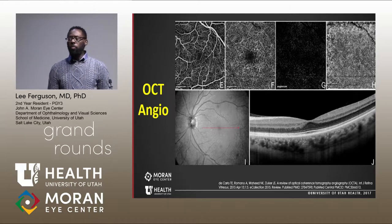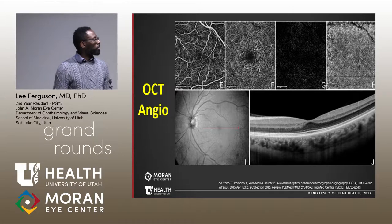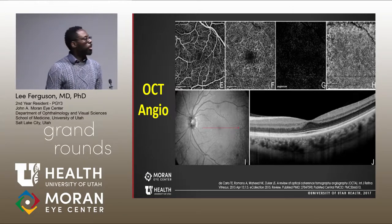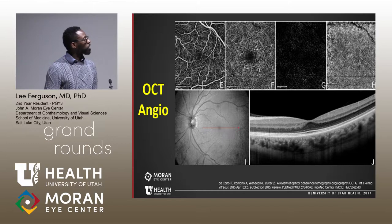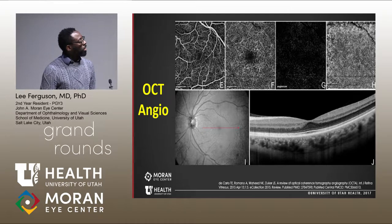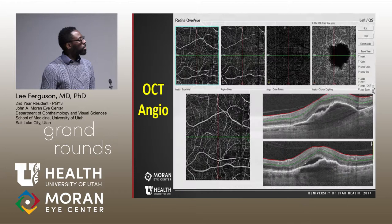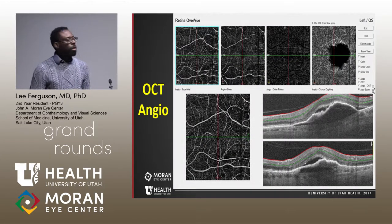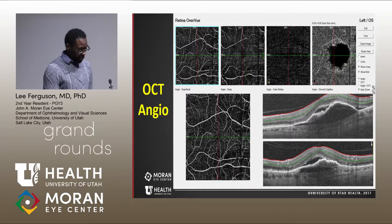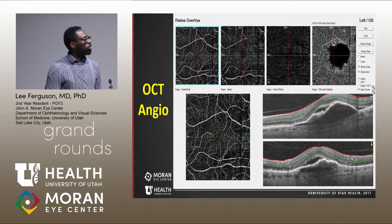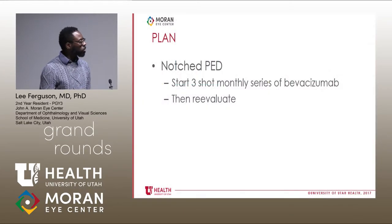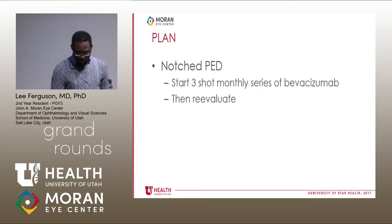OCT angiography is another means to identify and look at the vasculature. In a normal individual, you can see the inner retina with the superficial and deep capillary plexus, the outer retinal area, and then the choriocapillaris. In our patient, the inner retinal capillary plexus is normal and the outer retinal layer seems unremarkable, but at the choriocapillaris level there is this large dropout of vascular tissue.